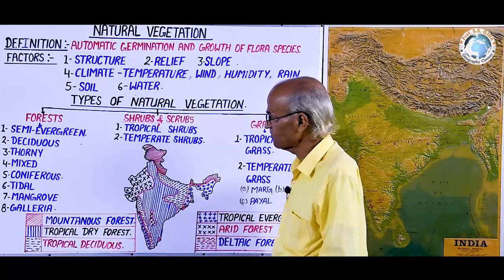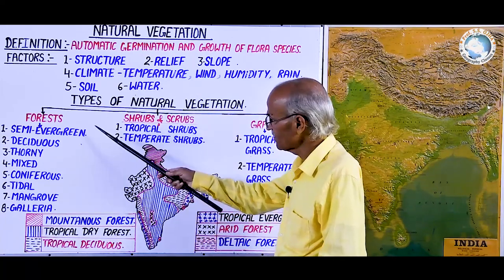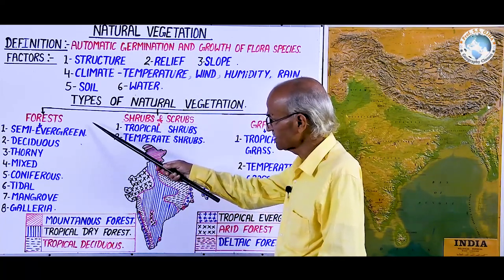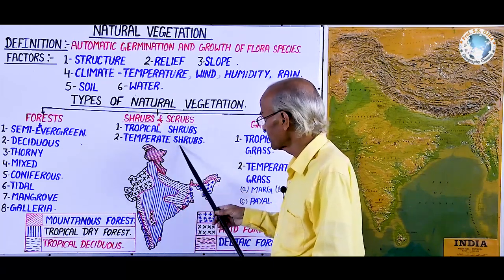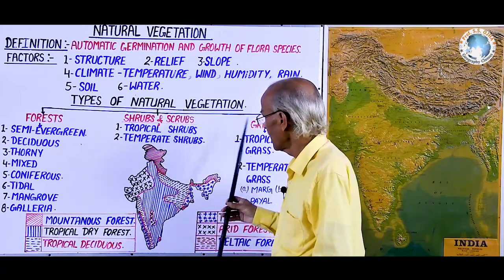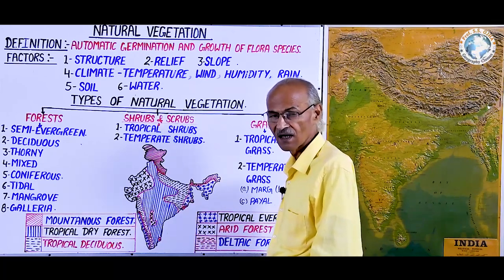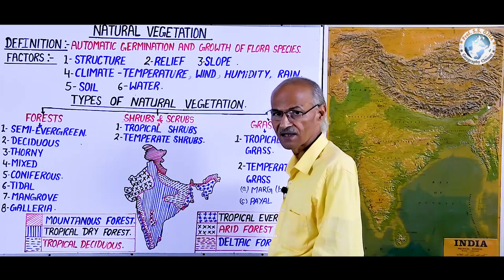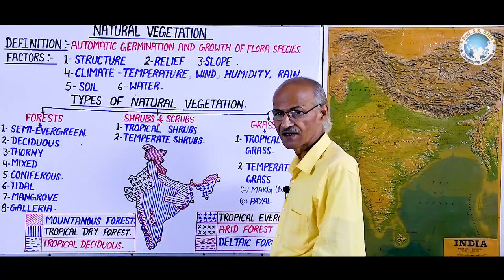Thus, natural vegetation consists of forests, scrubs and shrubs, and grasslands. These are found throughout India and sometimes in mixed form, but according to climatic conditions they have a unique and different identity in each region.